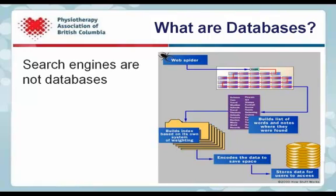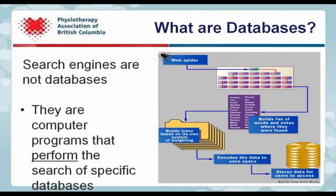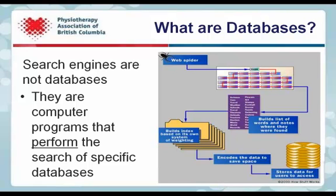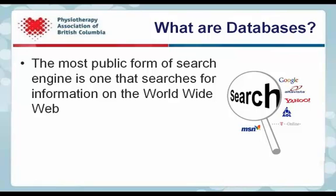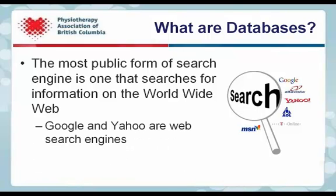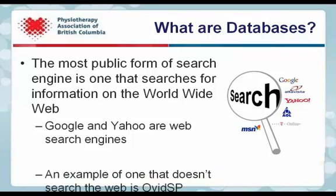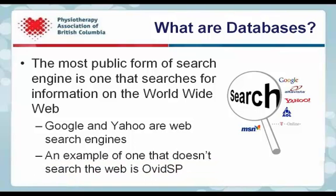Search engines are not databases. They are computer programs that perform the search of specific databases. The most public form of search engines is one that searches for information on the World Wide Web. Google and Yahoo are web search engines. An example of one that doesn't search the web is Ovid SP, which is used to search databases such as Medline.